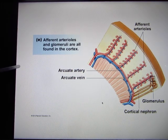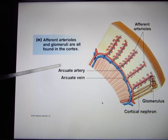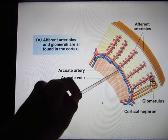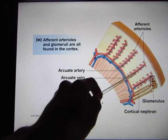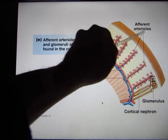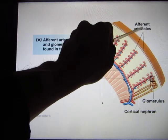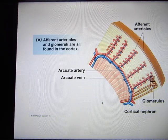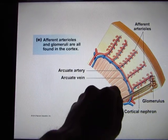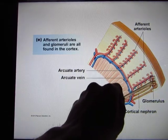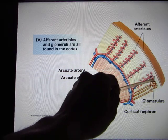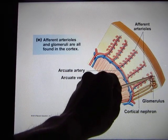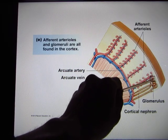When blood flows to the kidney through the renal artery, it gradually diverges, becomes an arcuate artery, and eventually goes to the efferent arteriole. These are the small arteries that send blood to the nephron. The head part of the nephron is called Bowman's capsule, and the capillary bed created there is called the glomerulus.